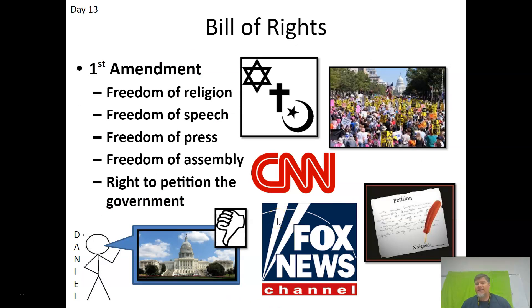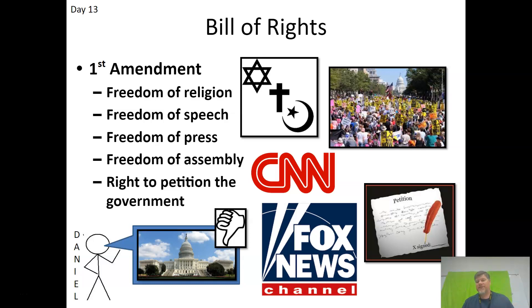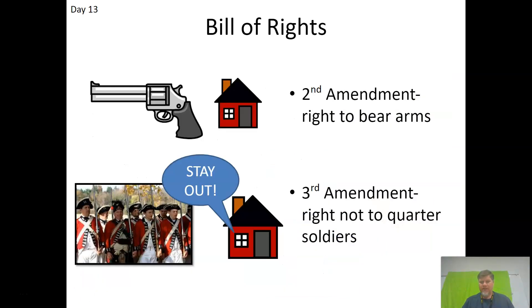The Bill of Rights is the first ten amendments, essential to protecting our rights. The First Amendment protects freedom of religion, assembly, petition, press, and speech. Some people say this is the most important amendment because of what it protects — and it's first for a reason.